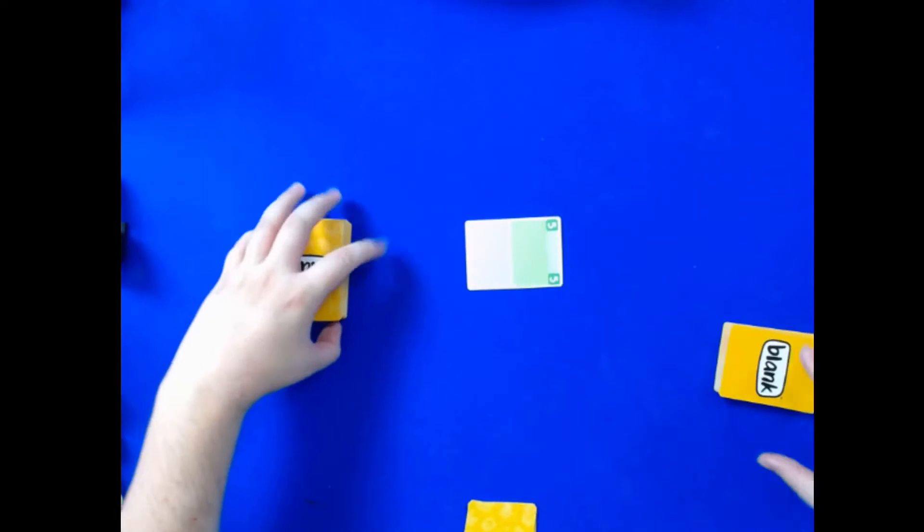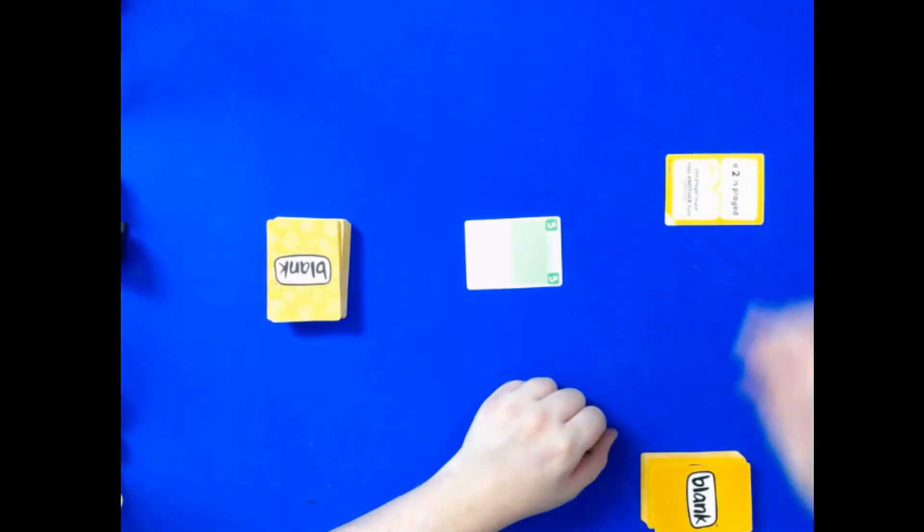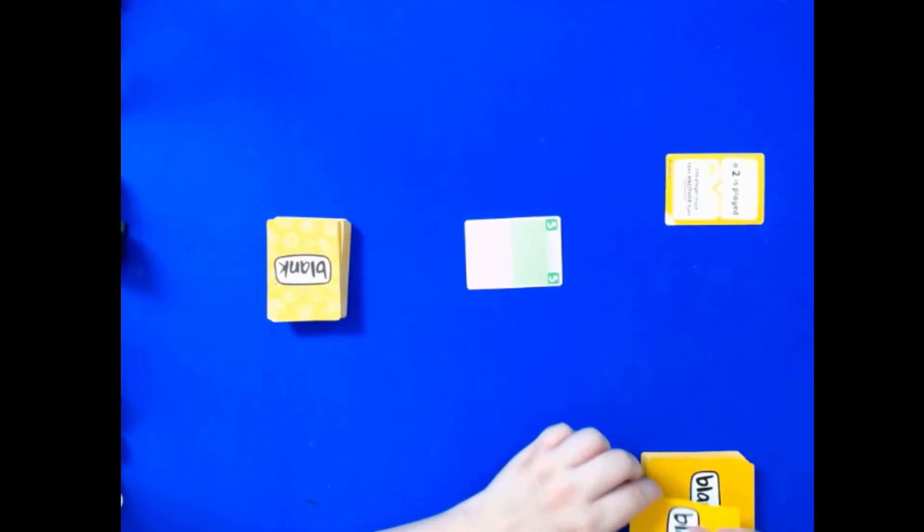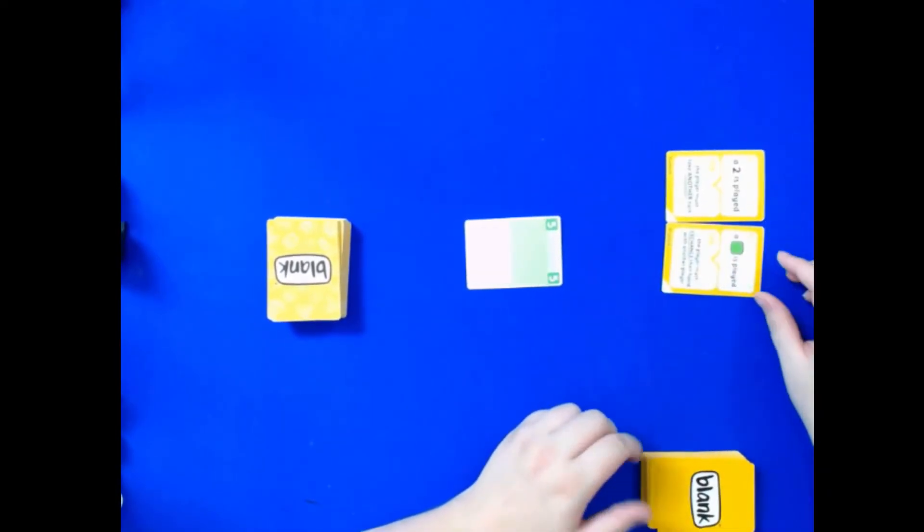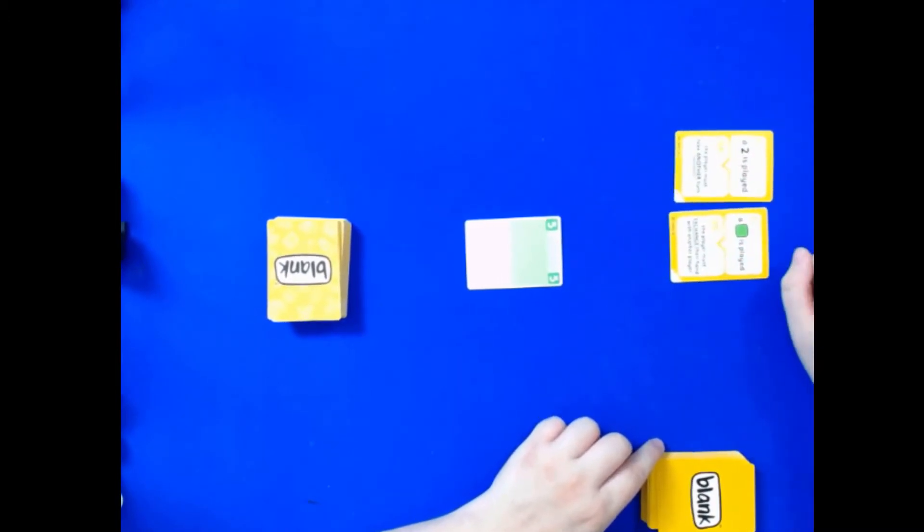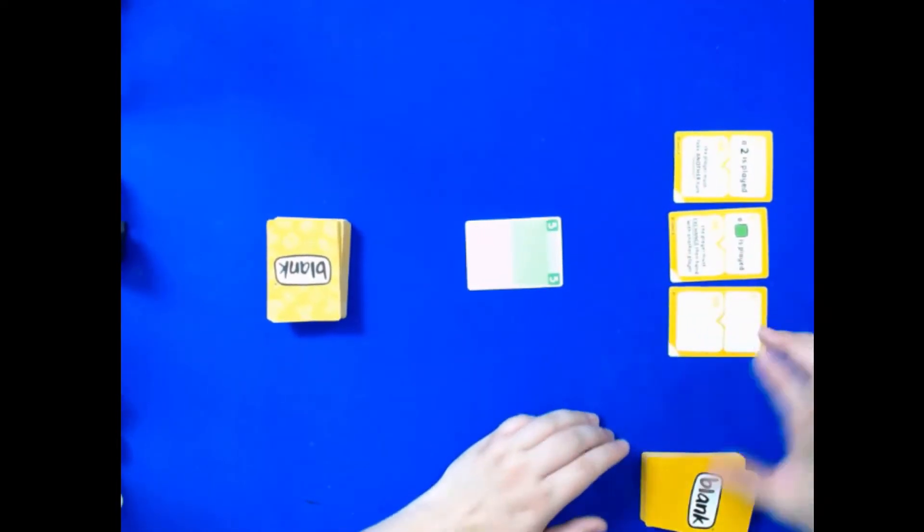This green five is what we're starting on, but before we start the game, these are three rules. Rule number one: the player must take another turn. Rule number two: if a green is played then the player must exchange their hand with another. Rule number three is nothing for this game.